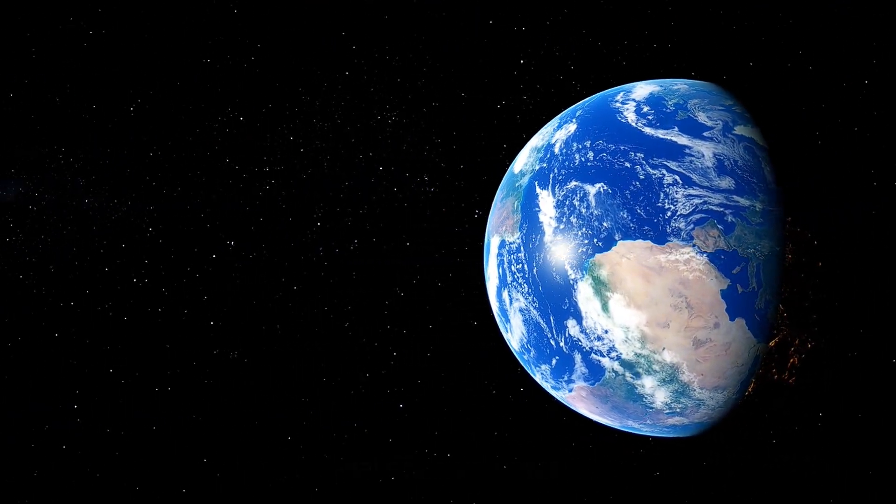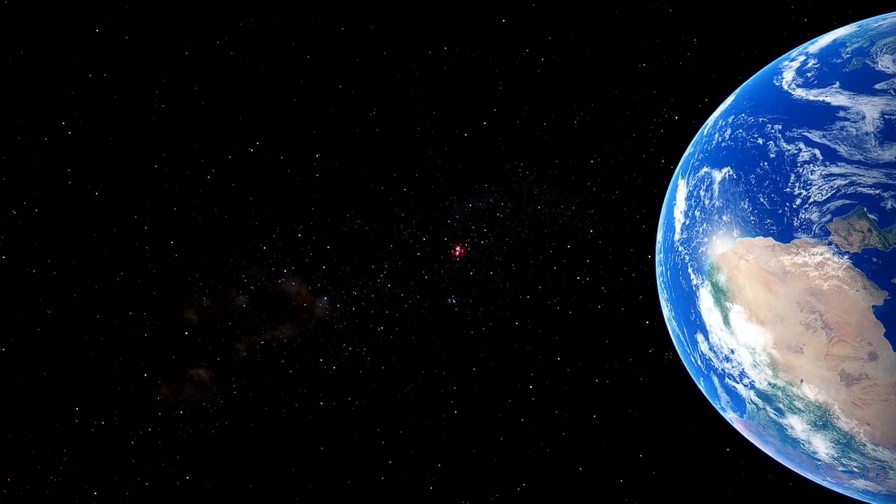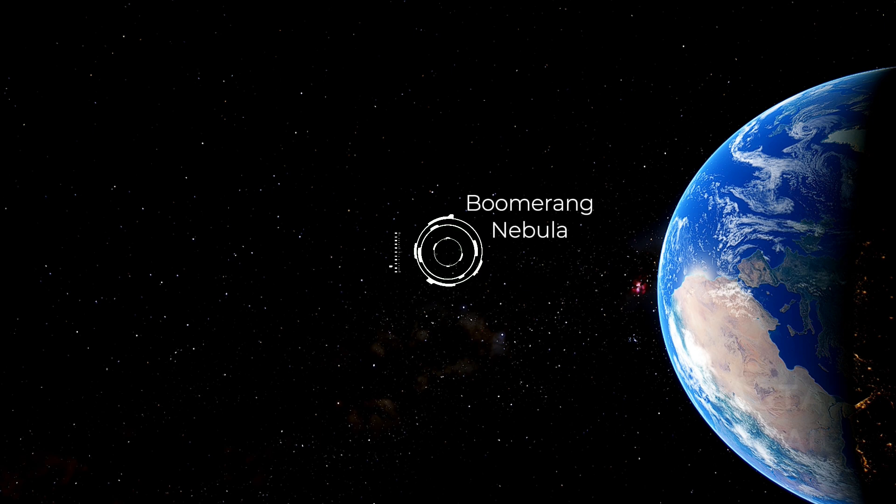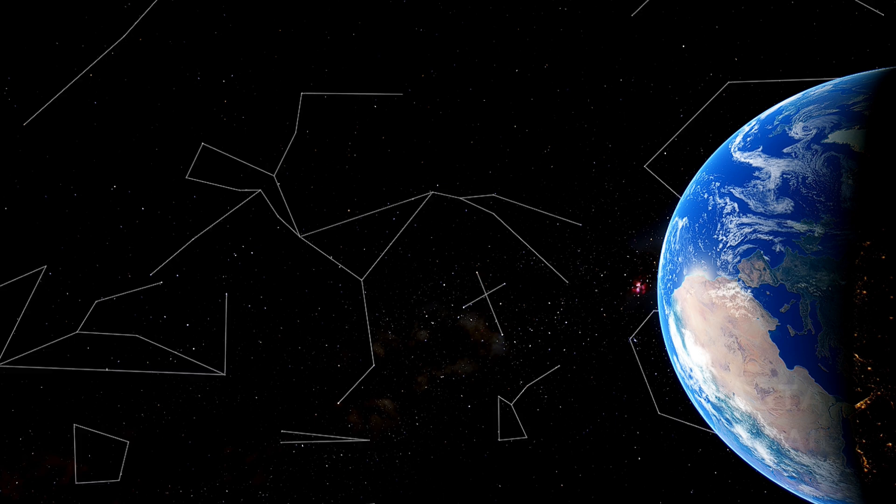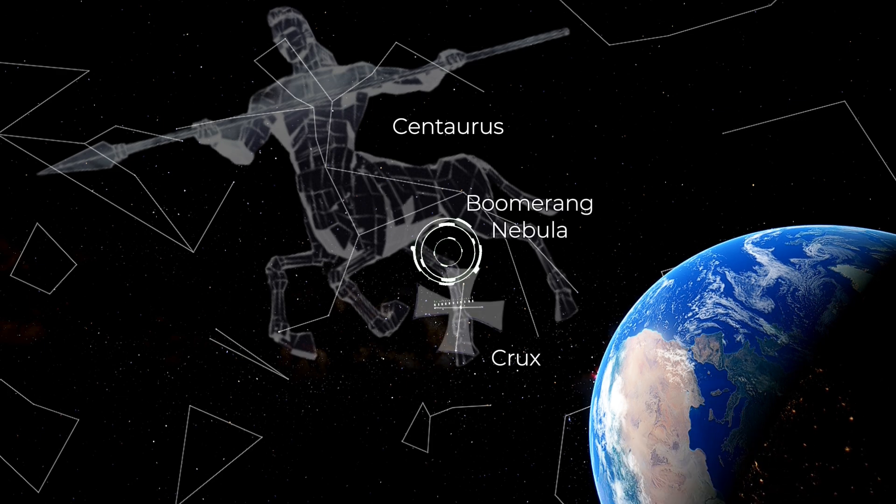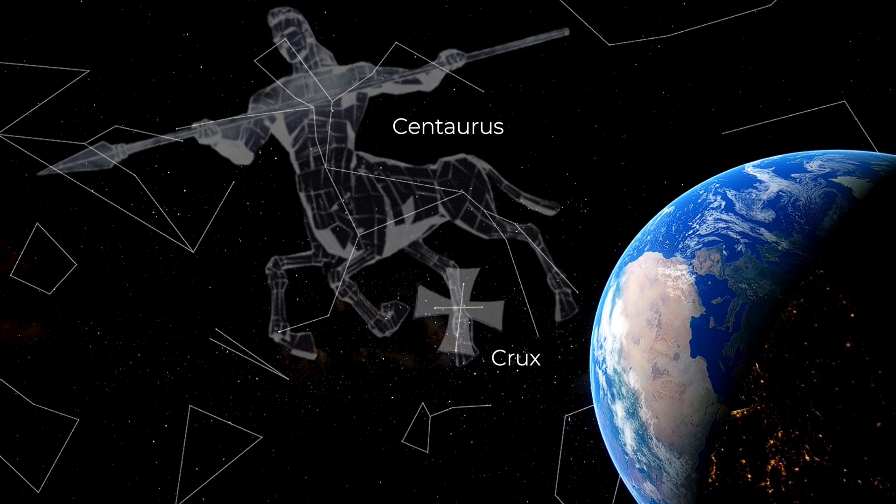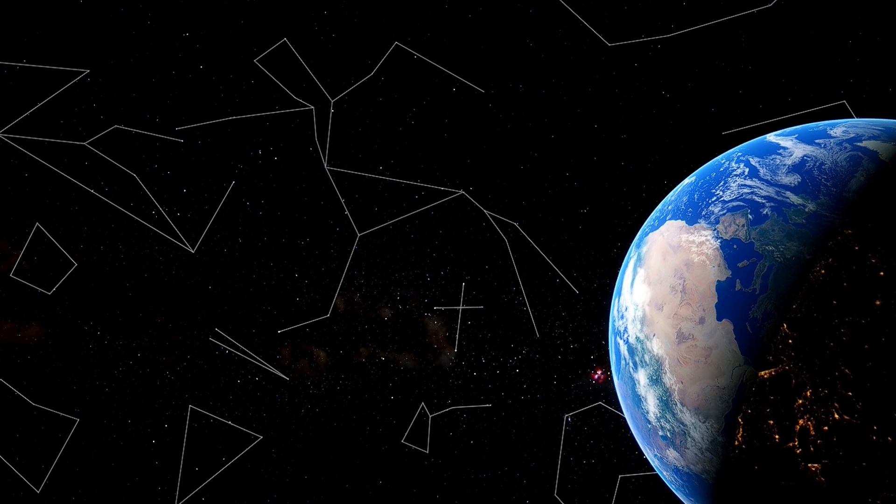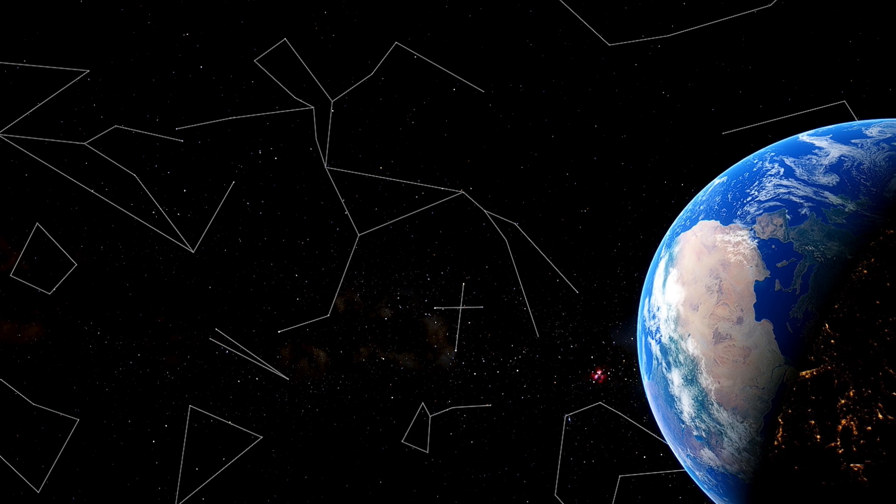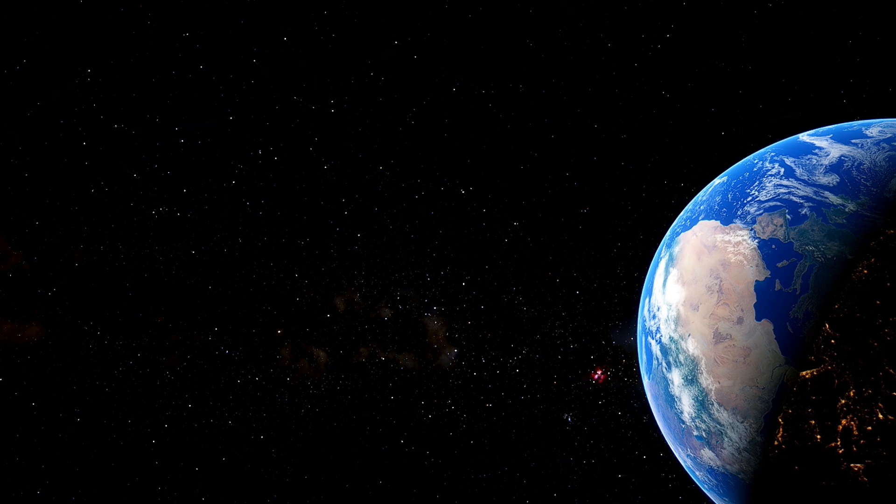The Boomerang Nebula stands as a testament to the universe's extremes, holding the record as the coldest known natural object. Its frigid temperatures make it even colder than the cosmic microwave background radiation. Situated in the southern constellation of Centaurus, near the Southern Cross, this enigmatic nebula is approximately 5,000 light-years from Earth. Despite its remarkable characteristics, the Boomerang Nebula remains invisible to the naked eye, revealing its secrets only through the lens of powerful telescopes.